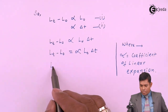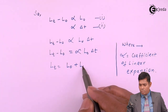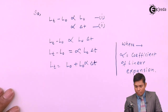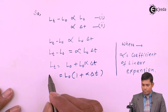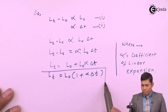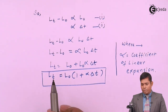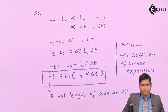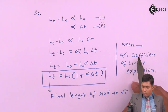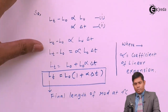From this equation, L0 moves to the right side, giving us: LT equals L0 plus alpha times L0 times delta T. Taking L0 common from both terms: LT equals L0 times (1 plus alpha delta T). This is the final length of the rod. If the initial length L0, alpha, and delta T are given, we can find the final length. We will now discuss more about the coefficient of linear expansion and define it with its unit.